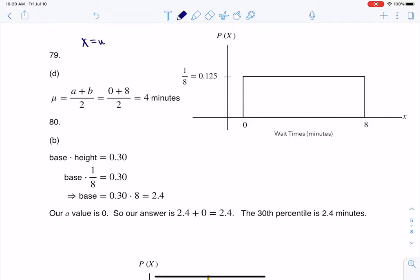So again, if my variable here is wait times, and we're going in minutes, that's a numerical variable, so it's going to have some units. We were told that basically it's a uniform distribution. The least amount of time you would wait is 0 minutes, and the most amount of time you would wait was 8 minutes.